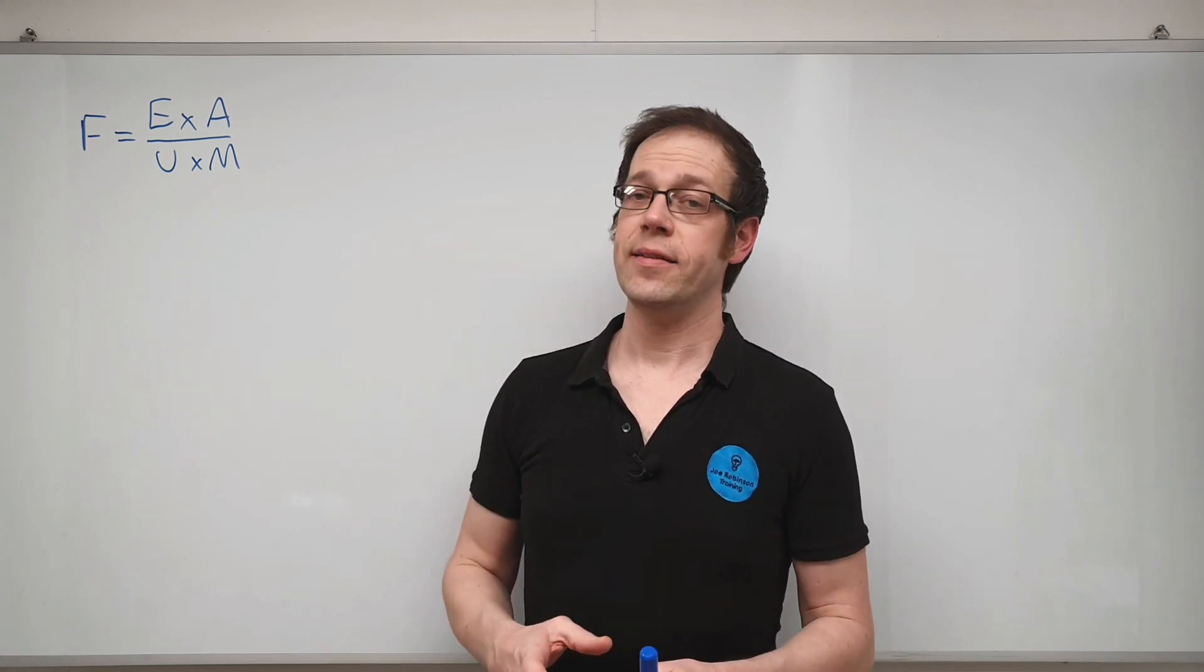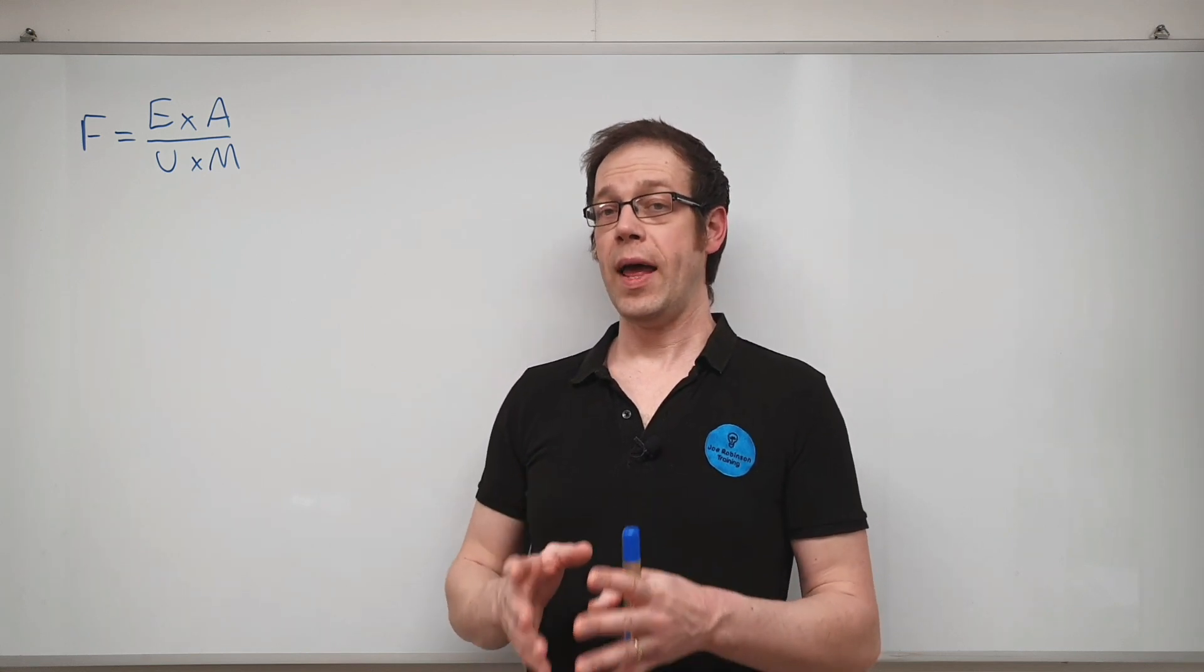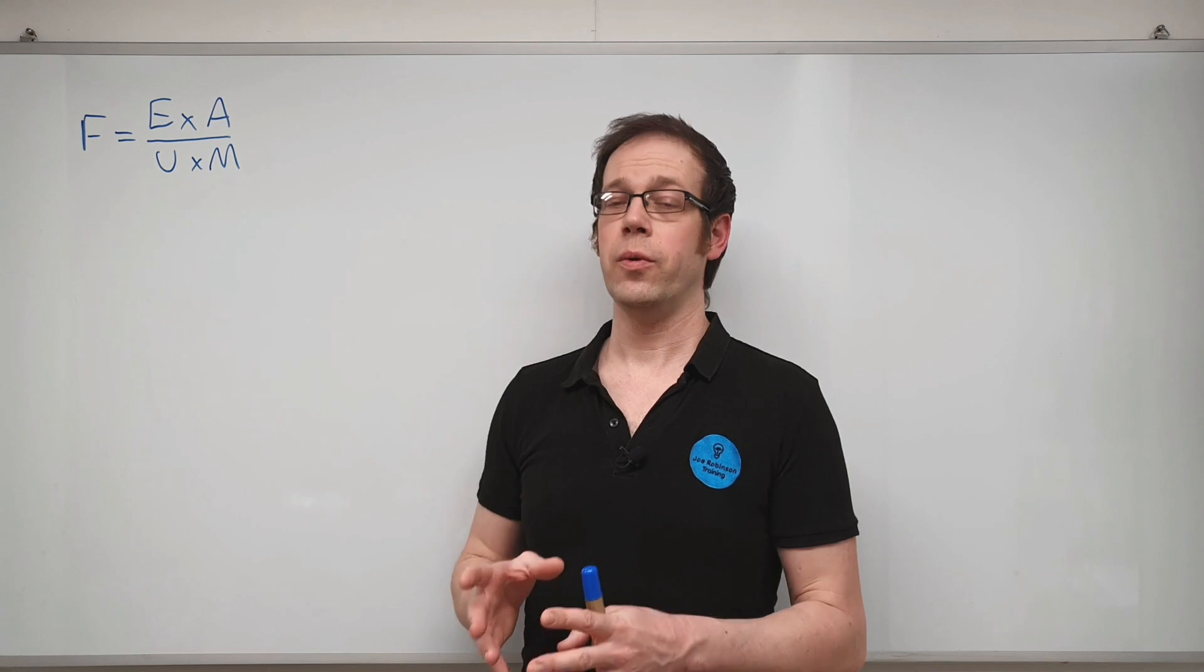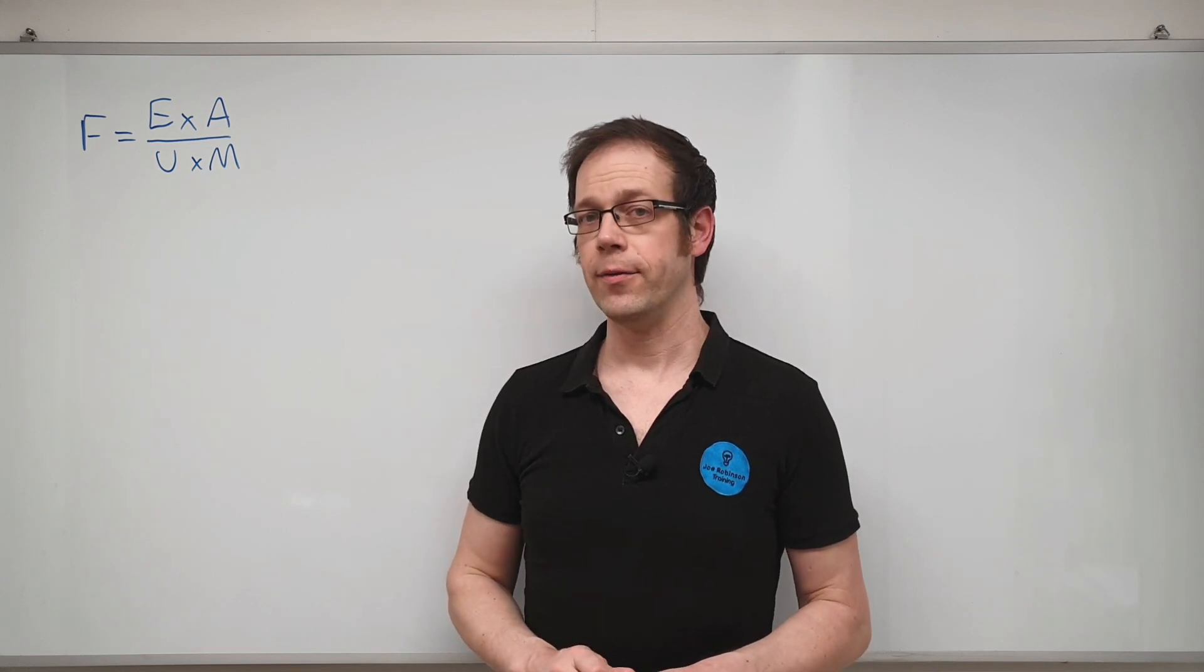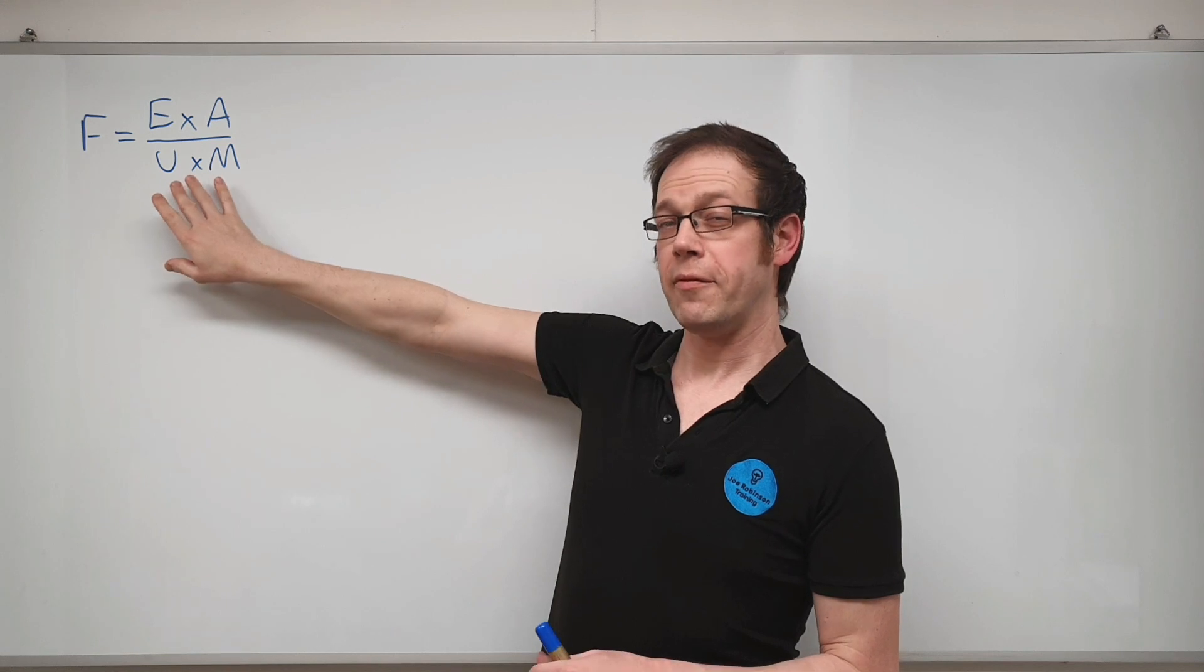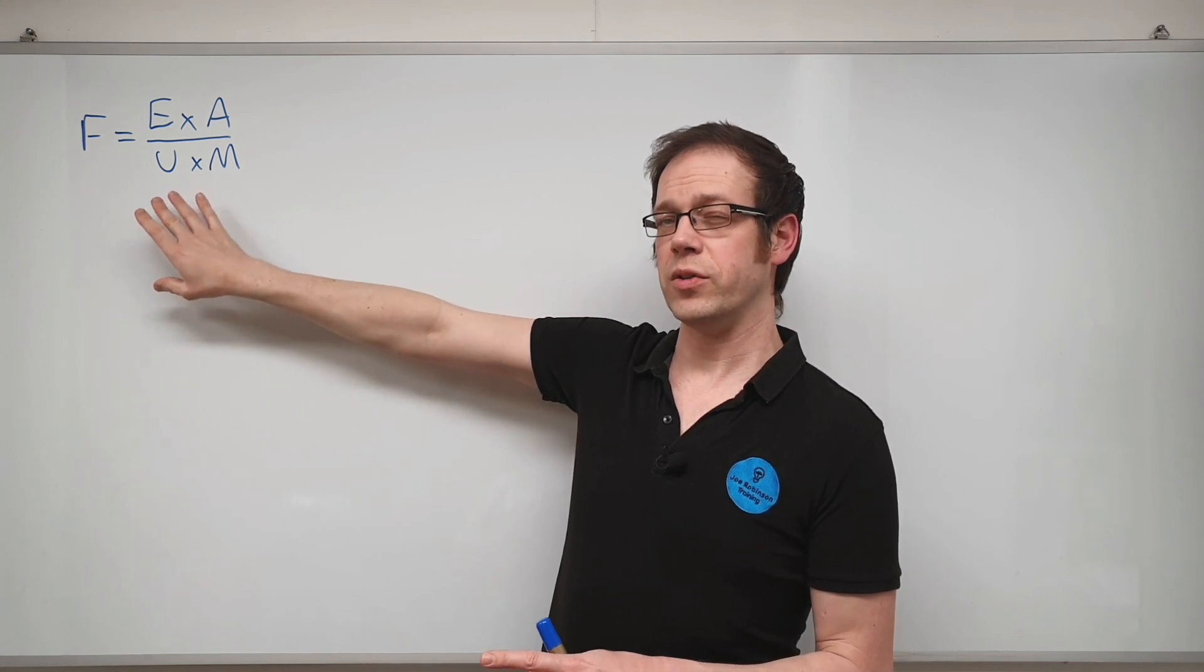Now again bear in mind that for the maintenance factor the value for M will always be a value between zero and one so it will always be somewhere between those two values so it's worth noting it's interesting that both of these values on the bottom here will have a value somewhere between zero and one so what effect does that have on our calculations.